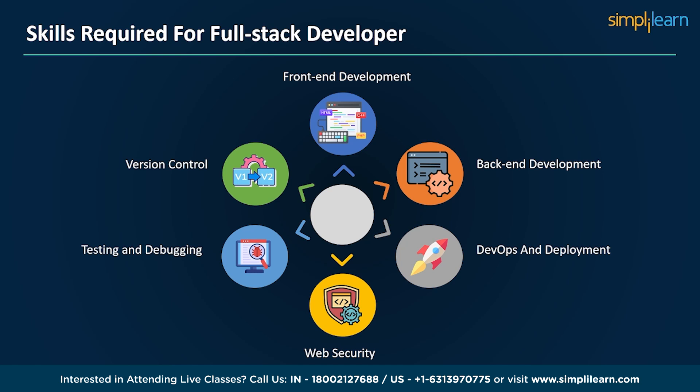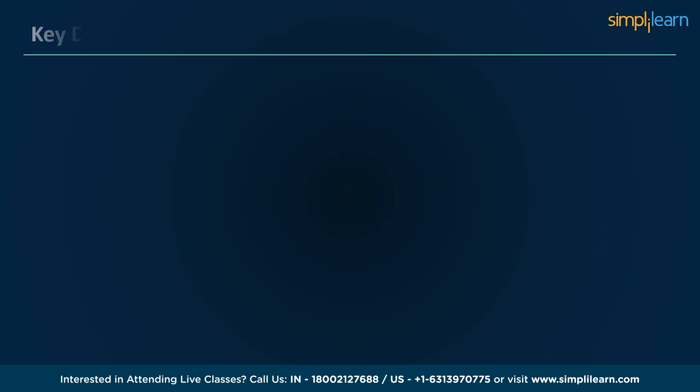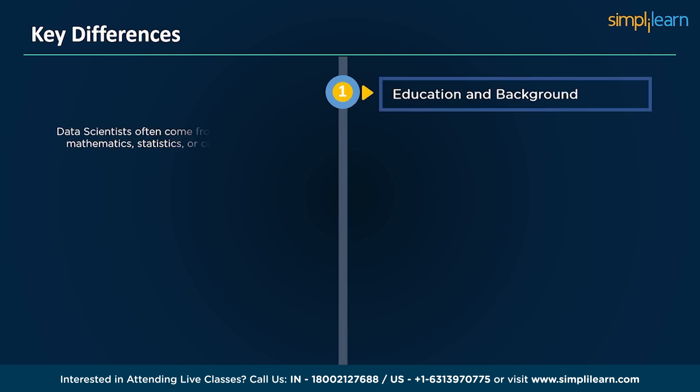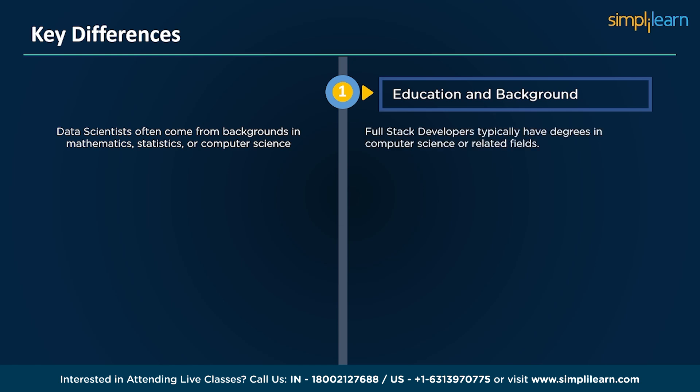So what sets these two roles apart? The first is education and background. Data scientists often come from backgrounds in mathematics, statistics, or computer science, and are skilled at exploring data and extracting actionable insights to inform decision making. In contrast, full stack developers typically have degrees in computer science or related fields, and are responsible for developing both the front-end and back-end of web applications, ensuring functionality and user experience.